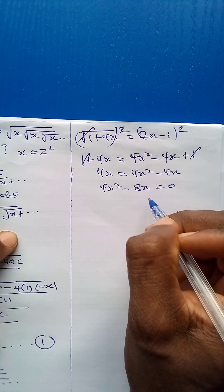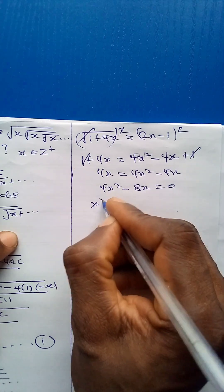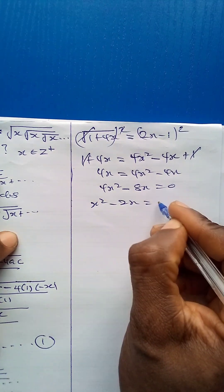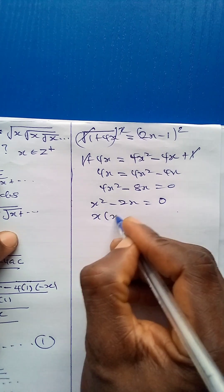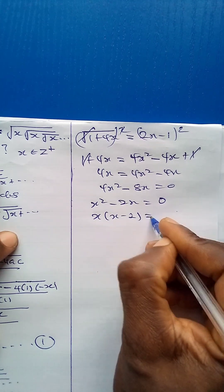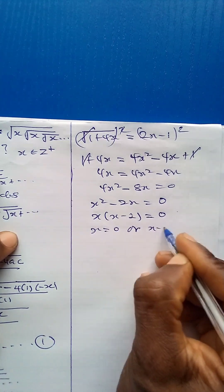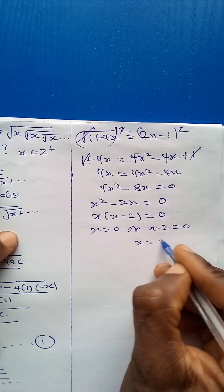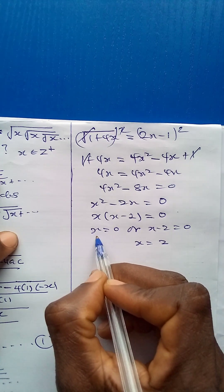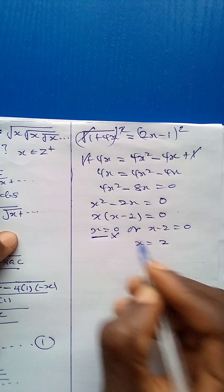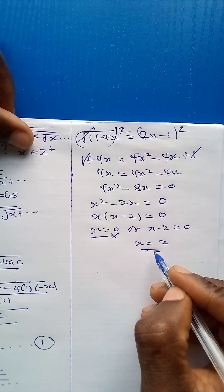To find x, divide both sides by 4: x squared minus 2x equals 0. Factorizing x: x times (x minus 2) equals 0, giving x equals 0 or x equals 2. Since x must be a positive integer, x equals 0 is rejected. Therefore the solution is x equals 2.